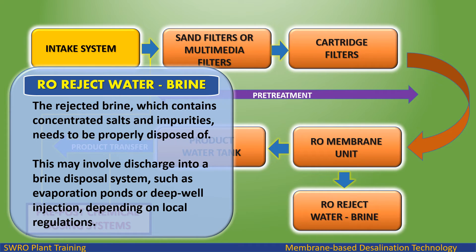RO reject water (brine) — the rejected brine, which contains concentrated salts and impurities, needs to be properly disposed of. This may involve discharge into a brine disposal system, such as evaporation ponds or deep well injection, depending on local regulations.